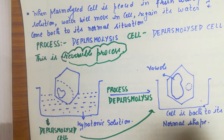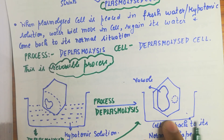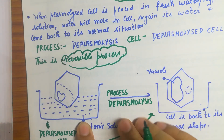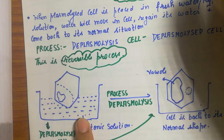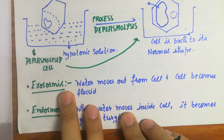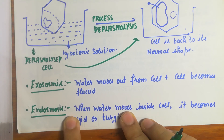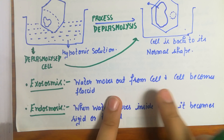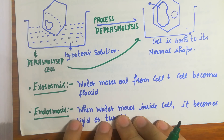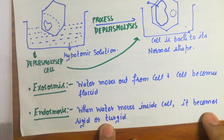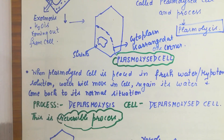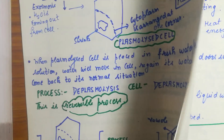This process of plasmolysis to deplasmolysis is reversible — a normal cell can become plasmolyzed and a plasmolyzed cell placed in fresh water can return to its original position. Two important terms: exosmosis, when water moves out from the cell, the cell becomes flaccid and shrinks; and endosmosis, when water moves inside the cell, it becomes swollen, rigid, or turgid.